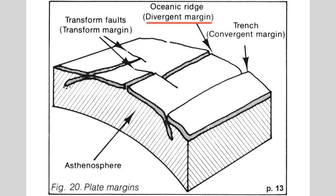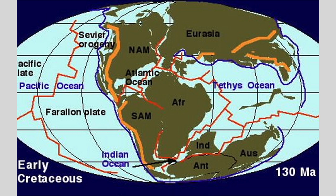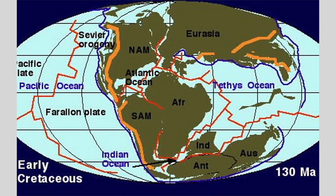If we take a look at a divergent margin where things are pulling apart, that's where we create that subsea mountain system — the 36,000 mile long system. The breaking up of South America and Africa, and the splitting apart between North America and Eurasia, gives us a divergent margin which ultimately produces that mountain range under the Atlantic Ocean and into the Indian Ocean.